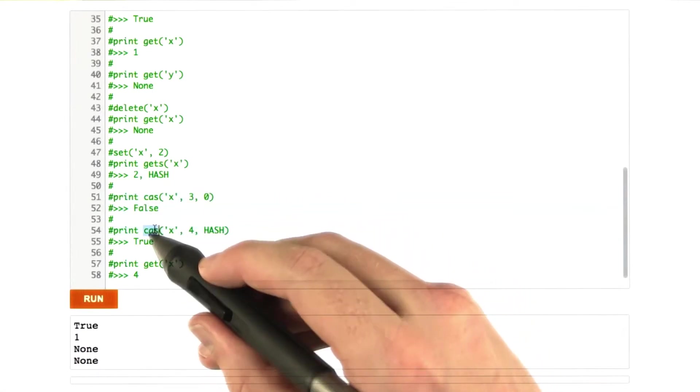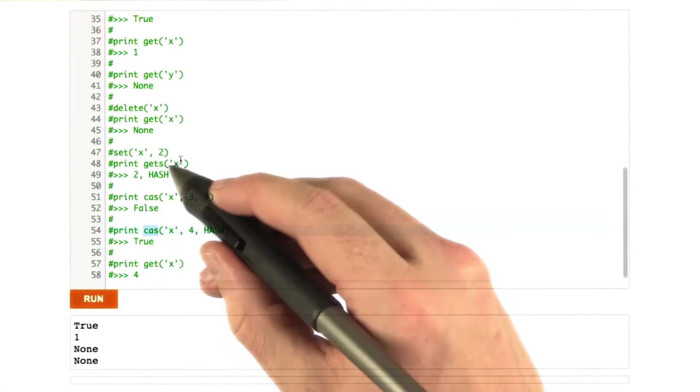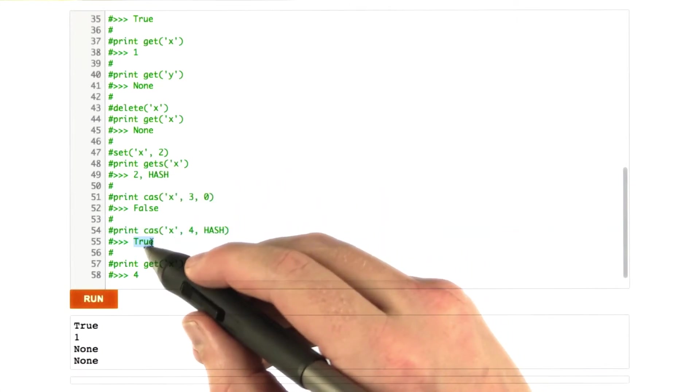And the cache should return false. And then if we run cas again with the correct hash, the one that was returned from gets, we should update the cache and return true.